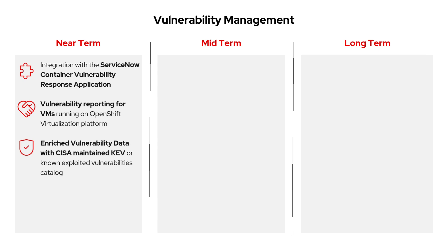After that, we're adding vulnerability reporting for virtual machines running on OpenShift. This strengthens security for VM workloads, since ACS will scan both virtual machines and containers for vulnerabilities. We're also enriching vulnerability data with the CISA-maintained Known Exploited Vulnerabilities Catalog, or CISA-KEV. That means ACS will prioritize fixing issues that are actively being exploited and pull in real-time updates from the CISA-KEV catalog, along with CVSS and EPSS scores.